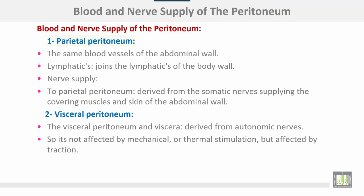Blood and nerve supply of the peritoneum: the parietal peritoneum has the same blood supply as the anterior abdominal wall for the anterior part and the posterior abdominal wall for the posterior part. Lymphatics join the lymphatics of the body wall. Nerve supply: the parietal peritoneum is derived from somatic nerves supplying the covering muscles and the skin of the abdominal wall. The visceral peritoneum and viscera are derived from autonomic nerves, so it is not affected by mechanical or thermal stimulation but is affected by distension.